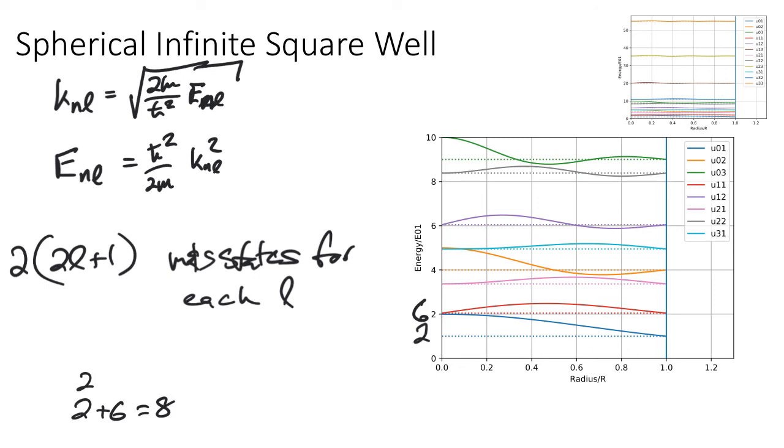As we go on though, the next level is L equals two. And it will have then 10 states. And so you might think we have two plus six plus 10 equals 18 states. But the next magic number in fact was 20. And so it doesn't quite work to give us the levels that we would expect.